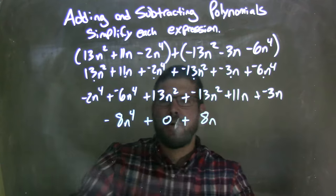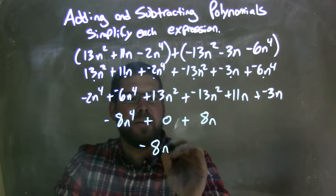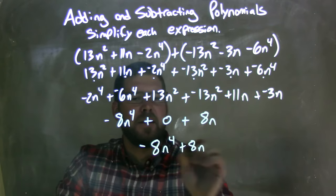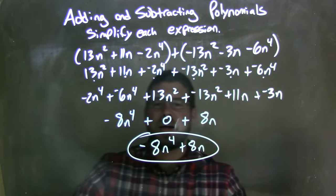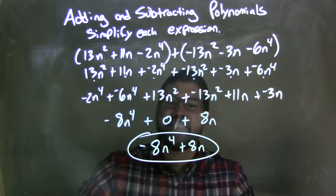Now we don't need a plus zero in the middle. So we can rewrite this to be negative 8n to the fourth plus 8n. And there we have it. We have our final answer. Negative 8n to the fourth plus an 8n.